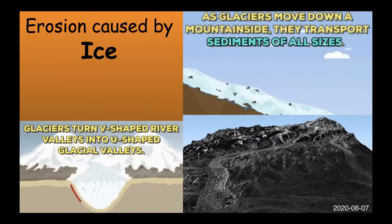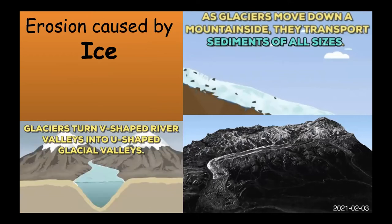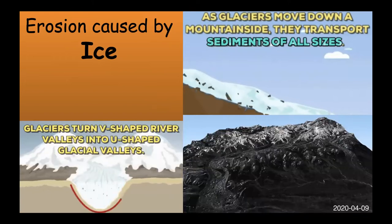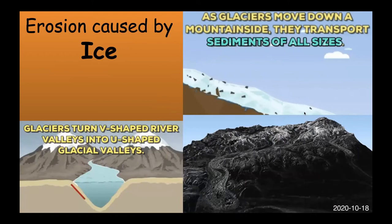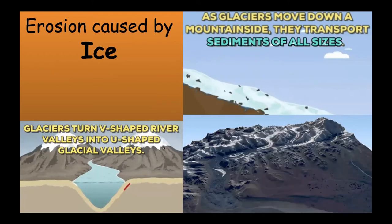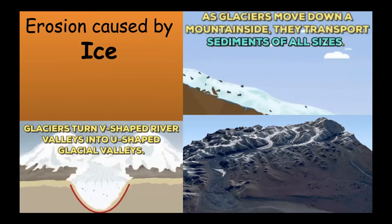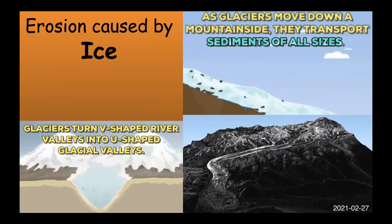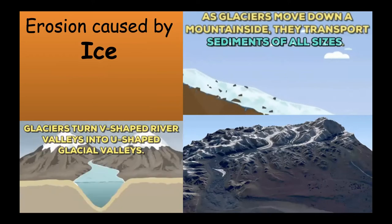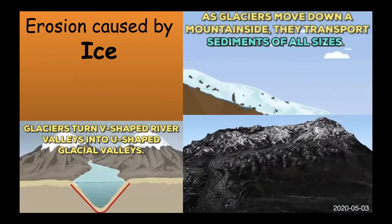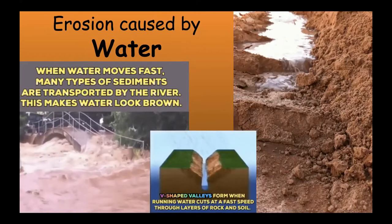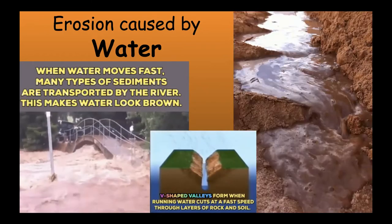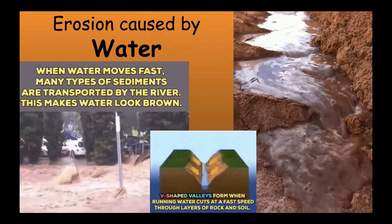Through gravity, sediment carried by glaciers is deposited in new locations. Glaciers can create broad U-shaped valleys and other landforms as a result of erosion. Ice can indeed move or erode sediment. Water is also a very common agent of erosion — you may see examples in your own backyard or school.